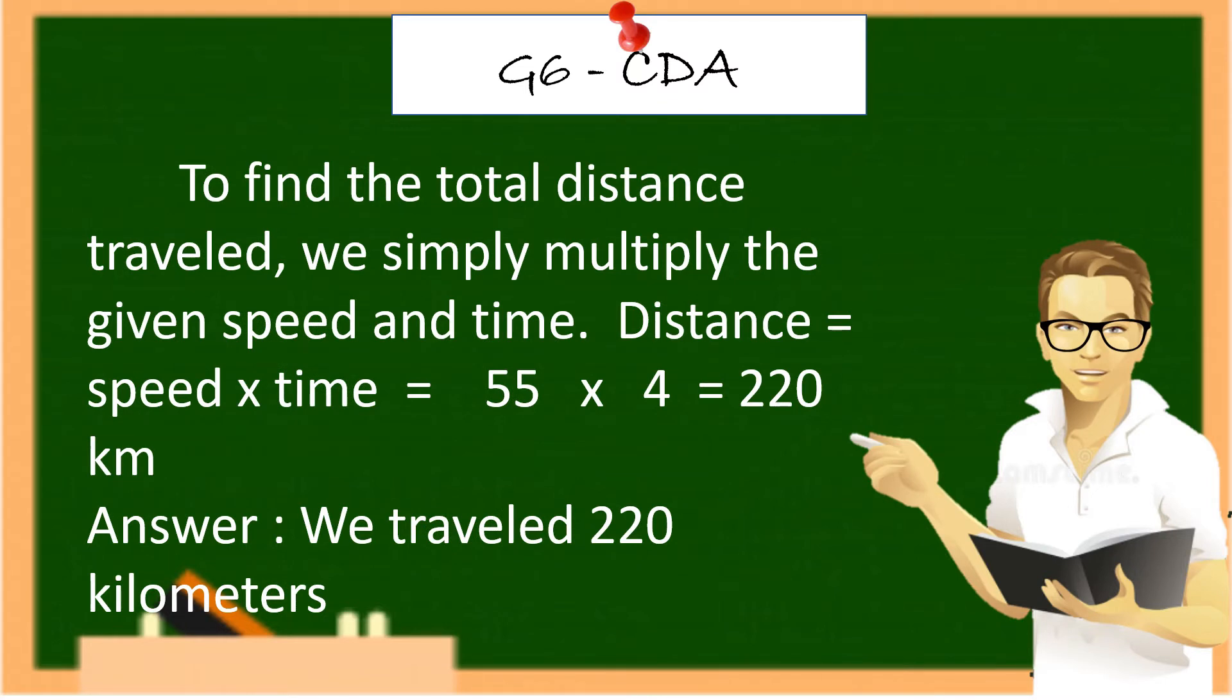To find the total distance traveled, we simplify and multiply the given speed and time. Distance is equal to speed times time, equals 55 times 4, equals 220 kilometers.